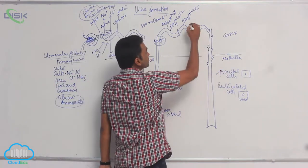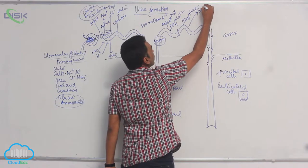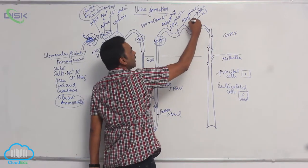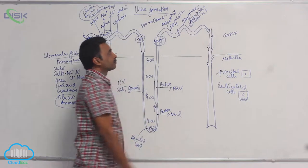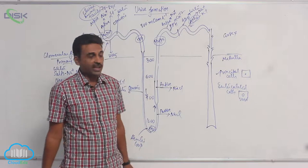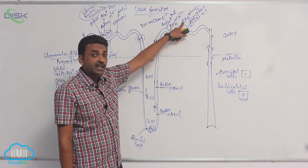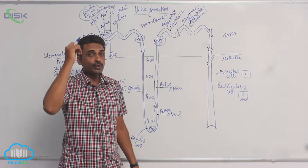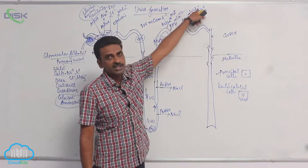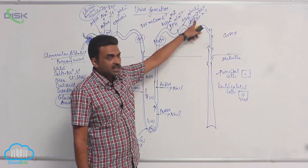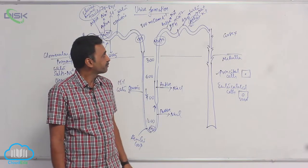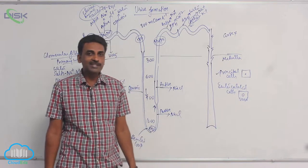The same principal cells also take in sodium and secrete potassium, and this occurs under the influence of aldosterone. So principal cells perform two functions: under ADH, they reabsorb water; and under aldosterone, they absorb sodium and secrete potassium. ADH is produced from the posterior lobe of the pituitary gland, while aldosterone controls the sodium-potassium exchange.